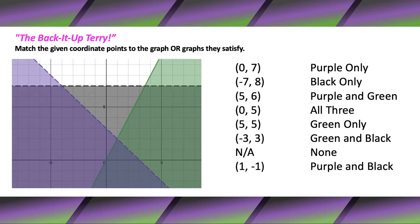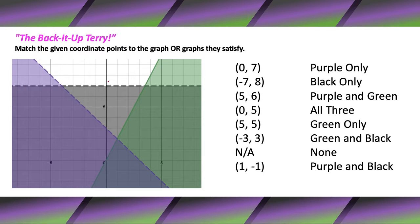Hey, what's up students. Let's do the 'back it up Terry' — match the given coordinate points to the graph or graphs they satisfy. Here's what you're gonna do: go one corner point at a time and see if it hits green only, green and black, all three, purple and black, just purple, just black, or nothing. So first point: zero and seven — it's right on the boundary line but it's a dashed boundary line, so that actually misses the black graph. Zero and seven is a none scenario — it's not gonna satisfy any of these graphs.